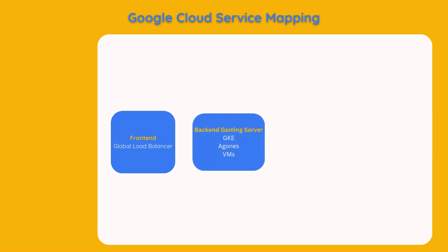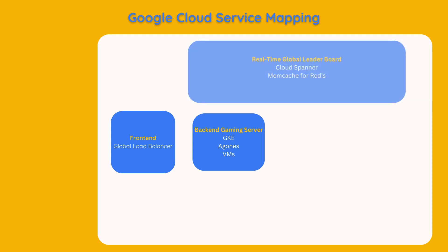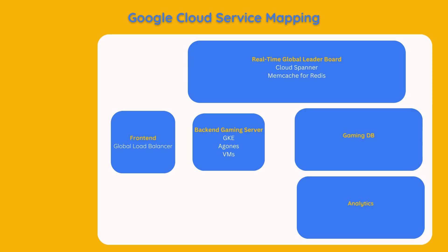For the back-end, there will be gaming back-end servers. Google Kubernetes Engine (GKE) is used as the back-end server for new games. Legacy games, however, are moved using a lift-and-shift approach, so there will be VMs for those games. Google suggests using Agones for game server management, so we will include that as well. For the real-time leaderboard, Cloud Spanner is utilised. Google also supports Memcache and Redis for this purpose, so we will incorporate them. Finally, there will be a GamingDB and Analytics component.